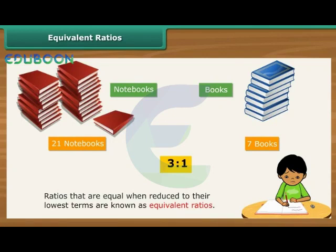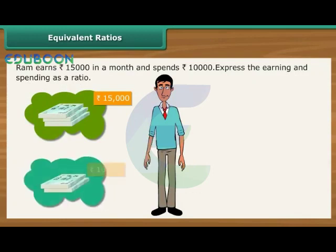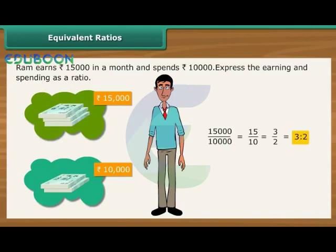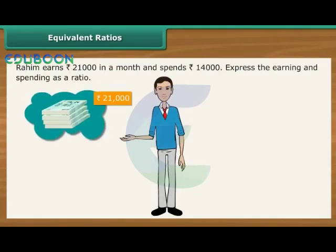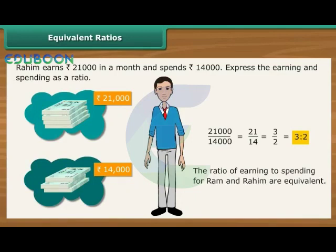Let us verify whether the following ratios are equivalent or not. Ram earns Rs. 15,000 in a month and spends Rs. 10,000. The ratio is 15,000 by 10,000, which is 15 by 10, reduced to the lowest term: 3 is to 2. It means that out of every Rs. 3 earned, Ram spends 2. Rahim earns Rs. 21,000 in a month and spends Rs. 14,000. The ratio is 21,000 by 14,000, which is 21 by 14, reduced to lowest term: 3 is to 2. Out of every Rs. 3 earned, Rahim also spends 2. The ratios for earning to spending for Ram and Rahim are equivalent.